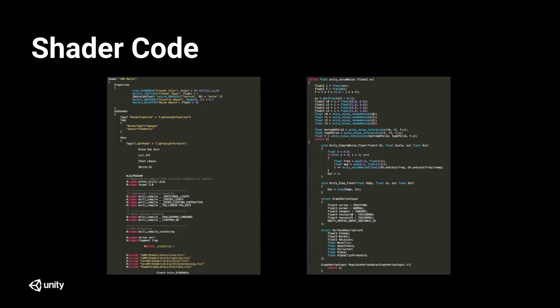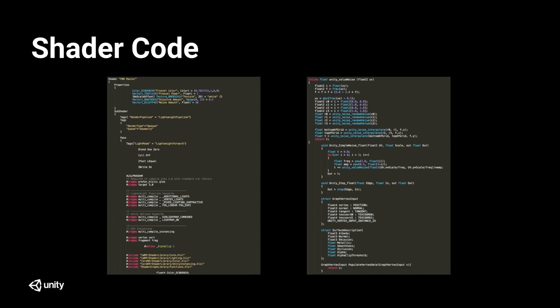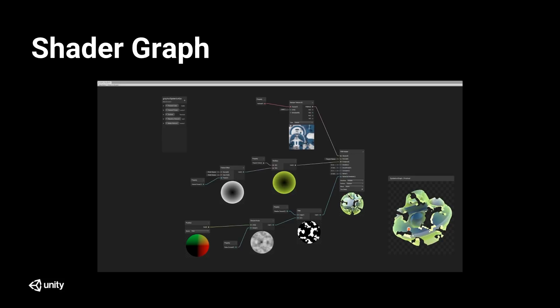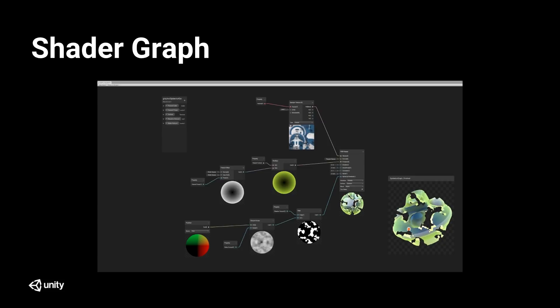So we decided to develop Shader Graph, which is a node-based, entirely visual tool. It takes a lot of these blocks, functions, or sections of code and converts them into visual nodes that contain a representation of that code. As opposed to writing code to determine something has a yellow outline or a Fresnel effect, we can instead use Shader Graph, create Fresnel nodes or colored nodes, connect them up, and achieve the same end result.